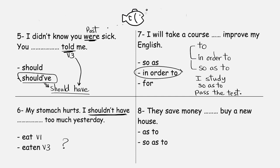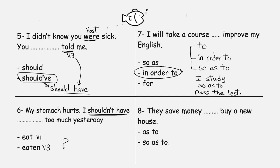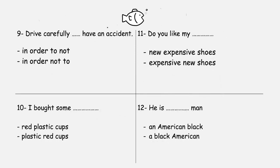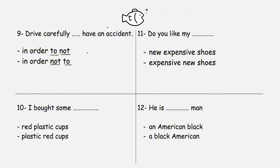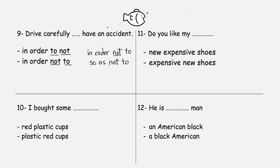'They save money blank buy a new house — as to or so as to?' Follow this rule and answer. Now: 'Drive carefully blank make an accident — in order to not make an accident, or in order not to make an accident?' The negative form is 'in order not to' and 'so as not to' — 'not' comes before 'to.' So that is the correct answer.